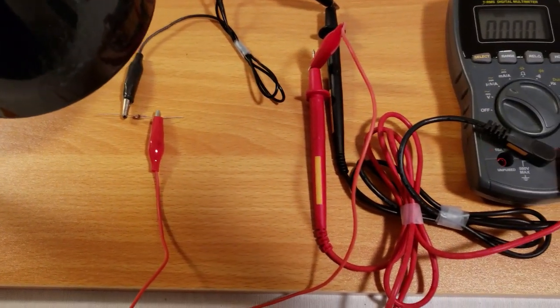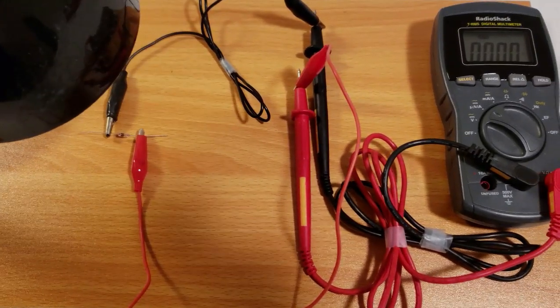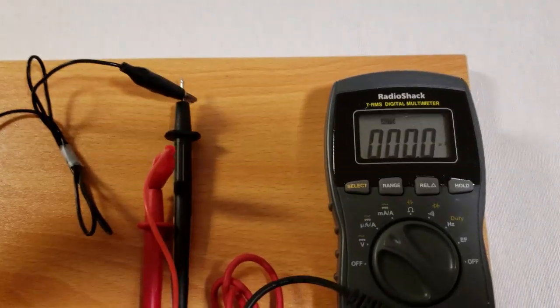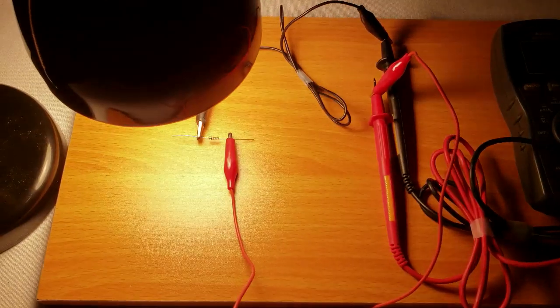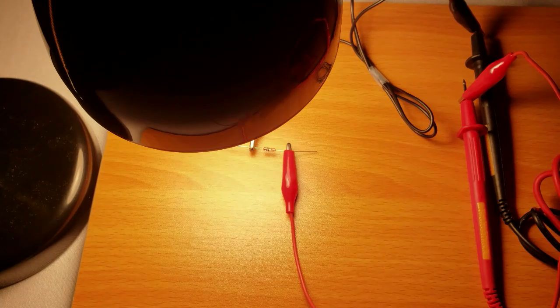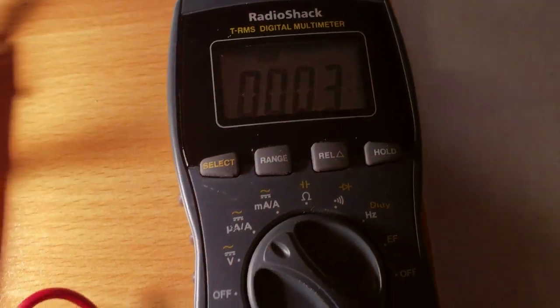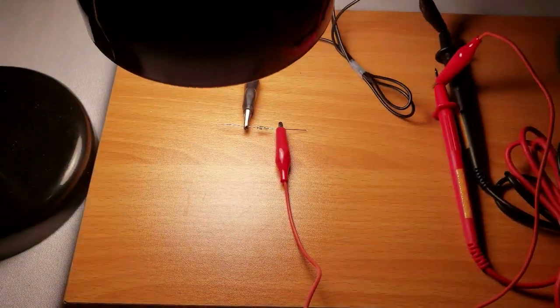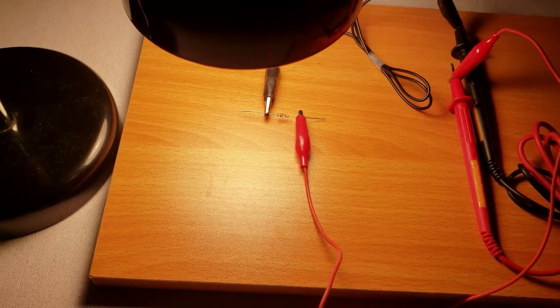So here we have a zener diode. Right now under the ambient light conditions of the room, it's not really generating any current as you can see here. Now with this light bulb on, I am getting a current of 0.3 microamps. This is a 250 watt light bulb. The strength of the light bulb makes a difference.